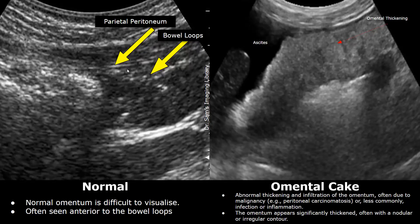The omentum is more easily seen in case of a pathology when it is thickened. This image shows a thickened omentum. You can see a thick irregular structure. This is called an omental cake because it has a cake-like appearance. Omental cake is usually seen in cases of advanced disease, such as malignancies.